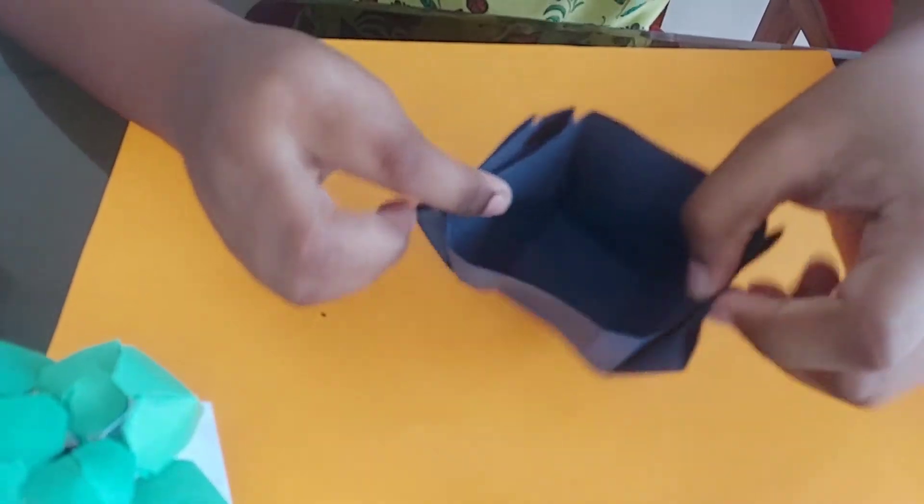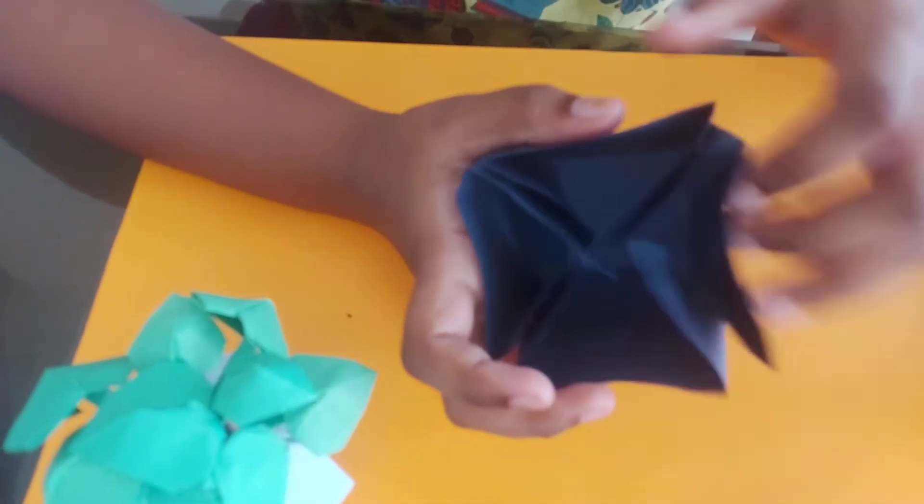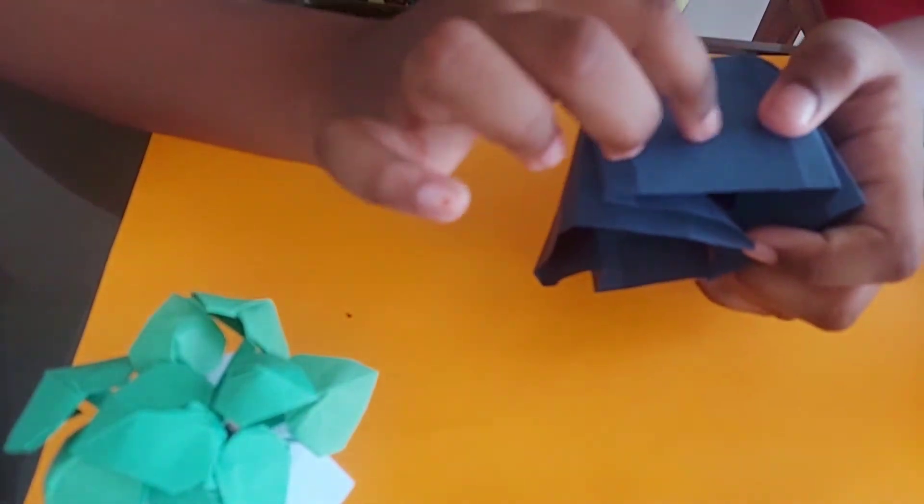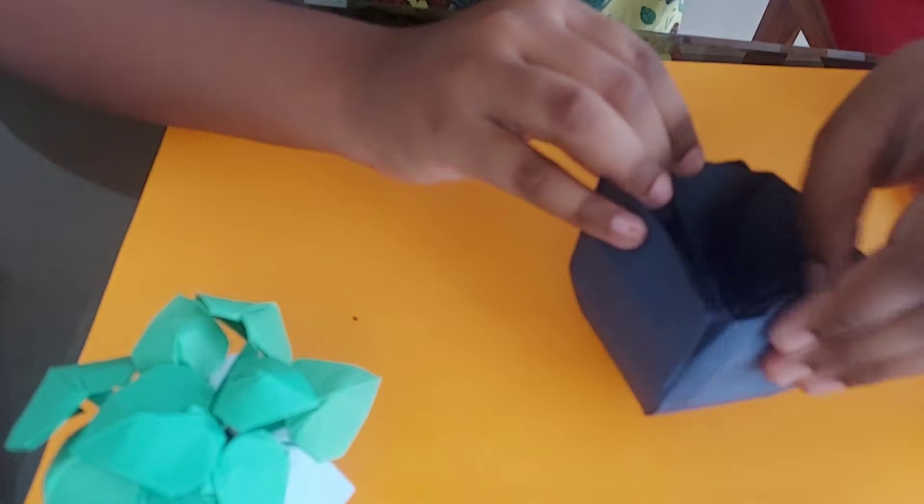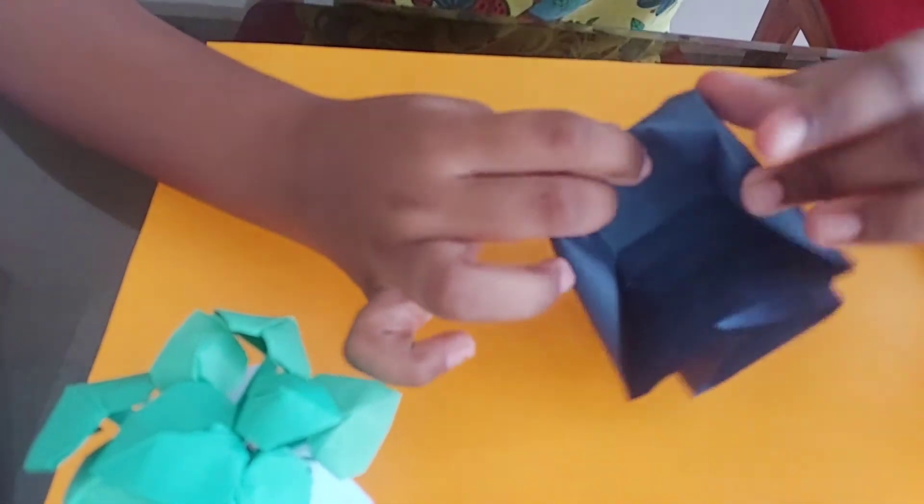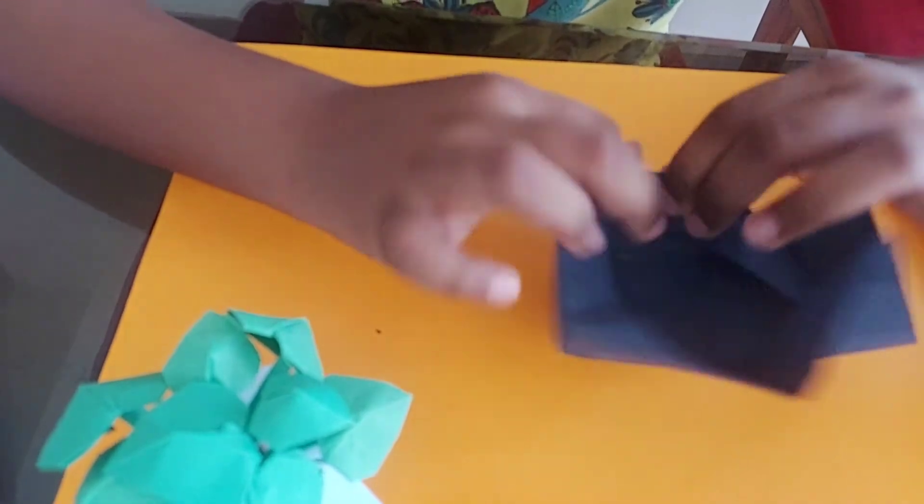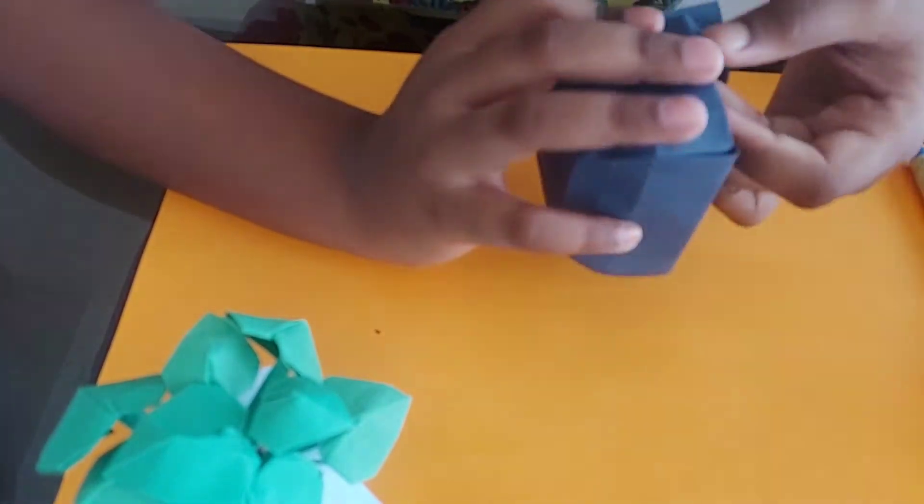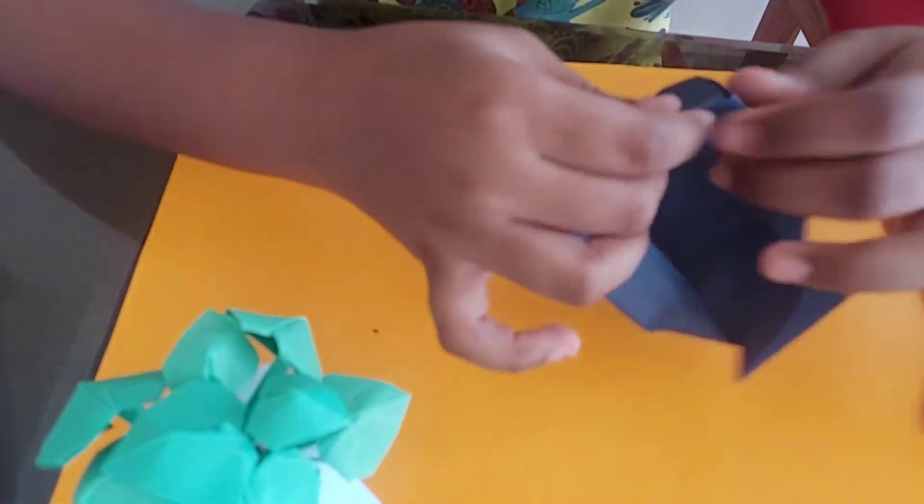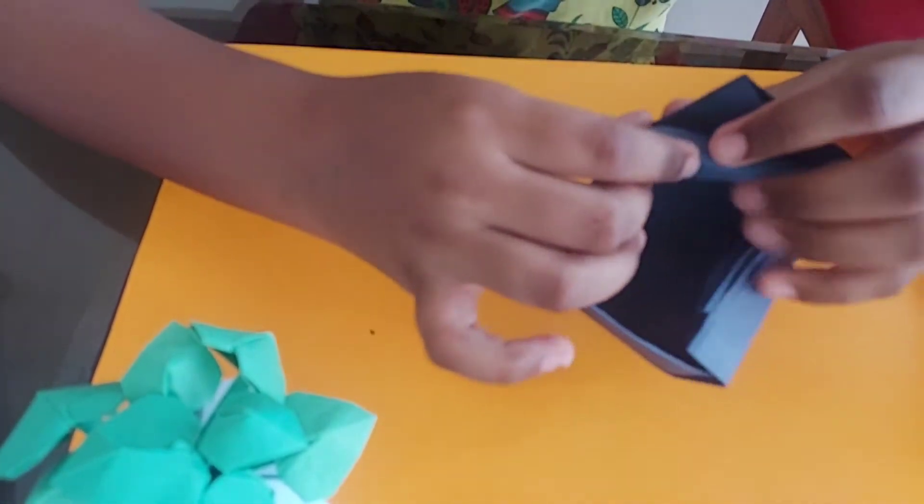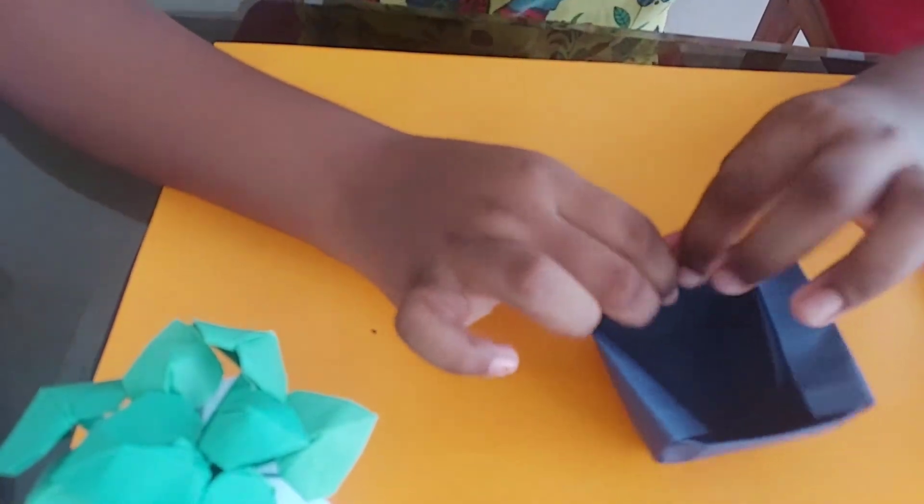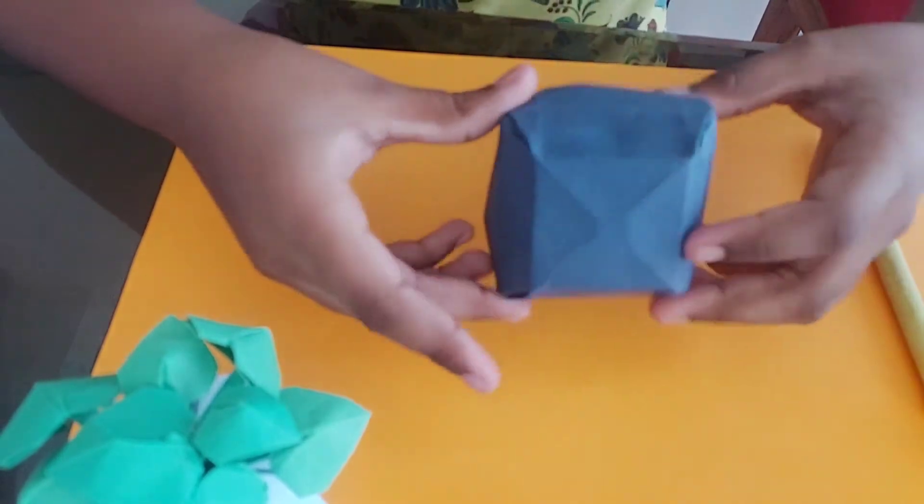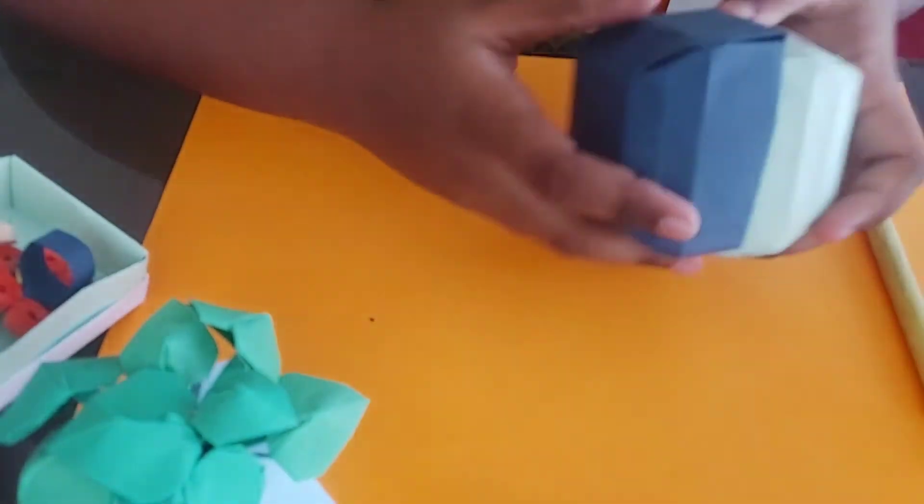Now you should get something like this. Now you would have a line right here. There we need to make a fold like this. And you would get something like this. This is the top of the container.